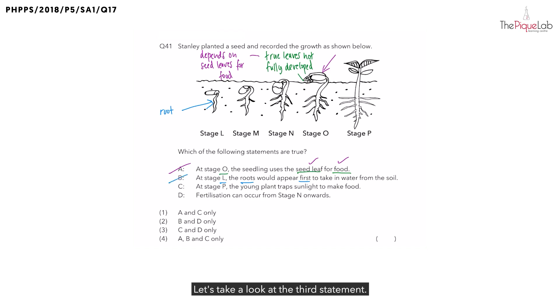Let's take a look at the third statement. At stage P, the young plant traps sunlight to make food. Remember those structures that have fully developed in stage P? What are those structures? Those are the true leaves. And what is the function of the true leaves? The function of the true leaves is to trap light. And what process would that light be used for? The true leaves can trap light for photosynthesis to make food. So, does that make statement C correct? Yes, this makes statement C correct.